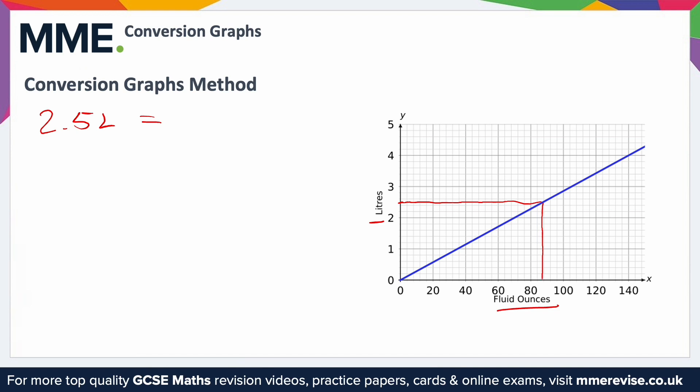Now you'll notice it's not on one of our major lines, it doesn't fall directly on 80 or 100 or anything like that, but it's two minor lines, the smaller squares, past 80. So if I can figure out what the minor lines are worth, then it's relatively straightforward.